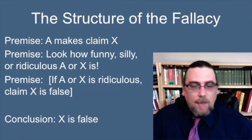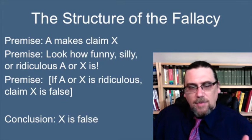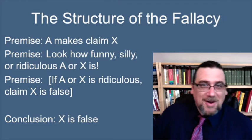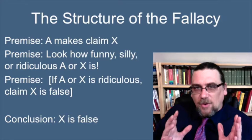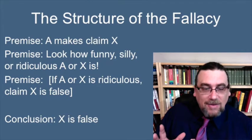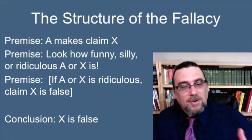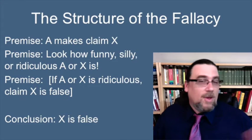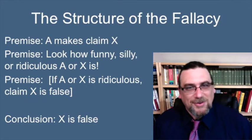What structure does this have? It's not very complicated, but there is one hidden premise to call attention to. The first premise is that a certain person A is making claim X. Then you point out how funny, silly, or ridiculous either A or X is. And then you say that X is false — we don't have to take X into consideration.